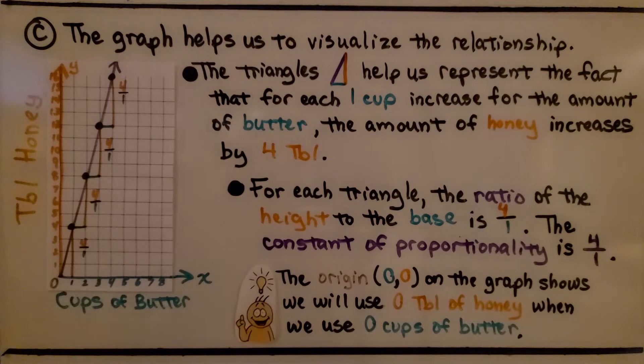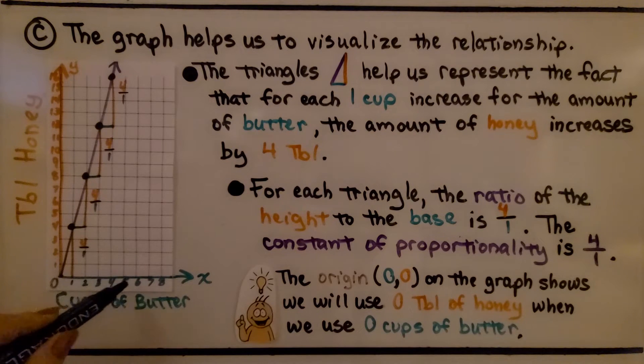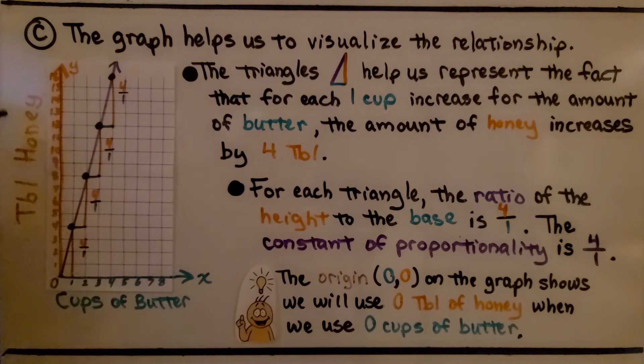The graph helps us visualize the relationship. We can see these are the cups of butter, from 0 to 8. And here's the tablespoons of honey starting from 1 and going all the way up. The triangles help us represent the fact that for each one cup increase for the amount of butter, the amount of honey increases 4 tablespoons. For each triangle, the ratio of the height to the base is 4 to 1.